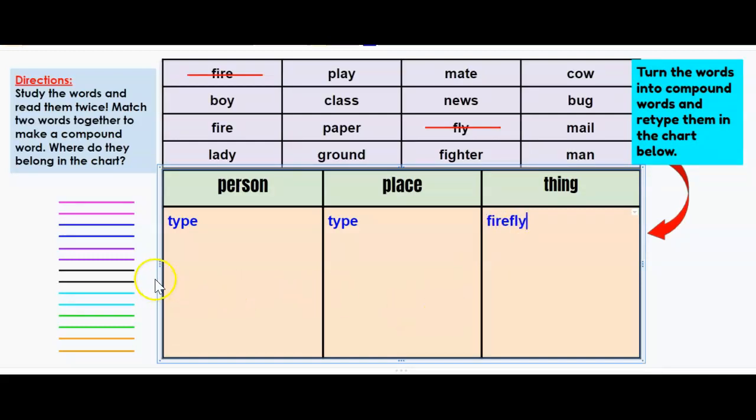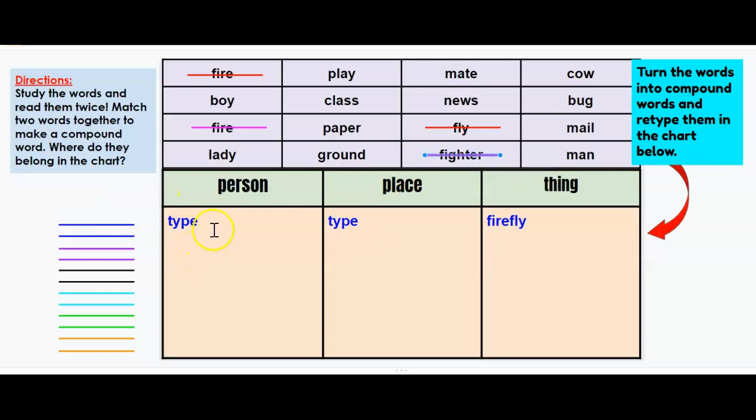I will do one more with you. I'm going to find another match: fire and fighter. So now I'm going to retype that and turn it into a compound word: firefighter. Is that a person, place, or thing?